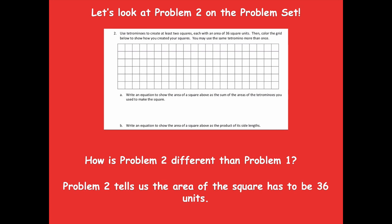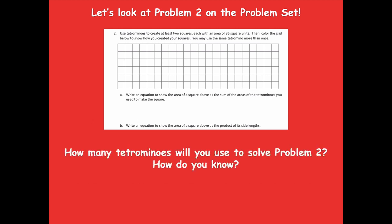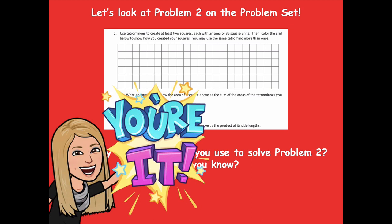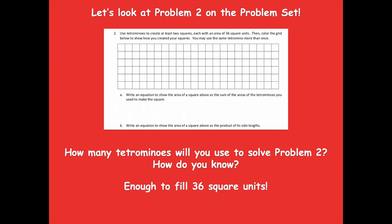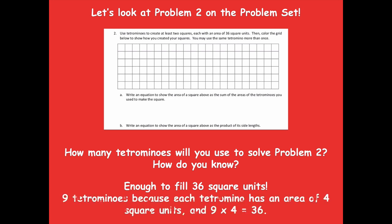Problem two tells us the area of the square has to be 36 square units. The first problem didn't tell us that — we were able to choose. So how many tetrominoes will you use to solve problem two? The area has to be 36 square units. We could use nine tetrominoes because each tetromino has an area of four square units, and nine times four equals 36. So 36 divided by four equals nine — you would need nine tetrominoes.